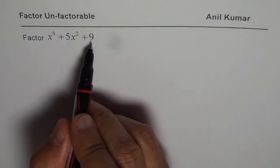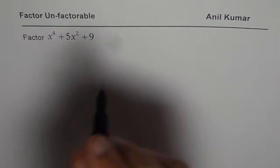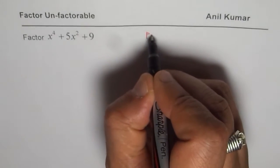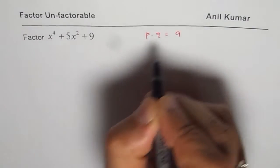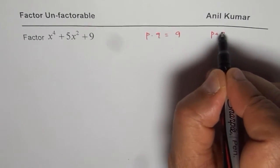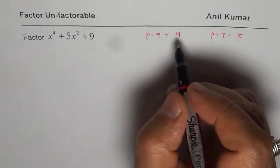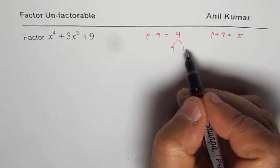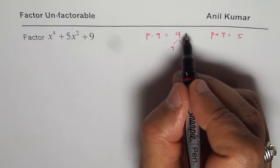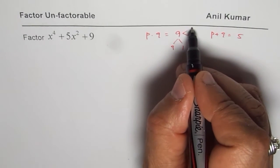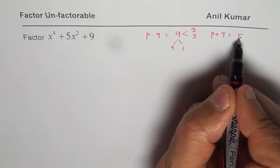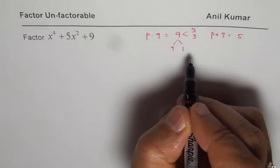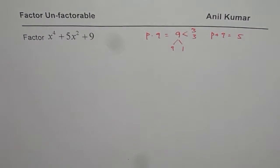Now if you try sum and product you are not going to get the result. Let us say p times q we want 9 and when we add p and q we want 5. 9 is 9 times 1, when you add or subtract you don't get 5, or it could be 3 times 3, that is also not going to give you 5. Therefore this is not factorable.